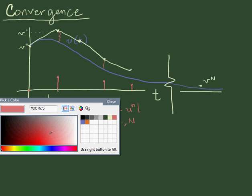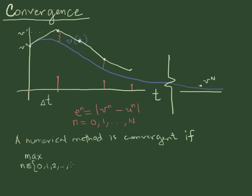All right, so now let's revisit the convergence theorem. The convergence theorem says that a numerical method is convergent if the following is true. So we want to take the maximum, and it's the maximum over a set of the iteration indices n.